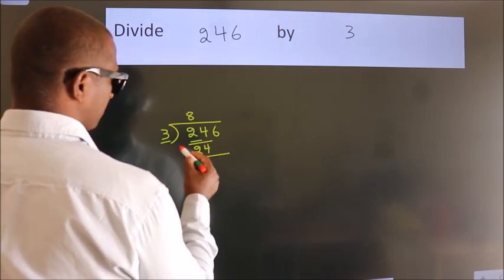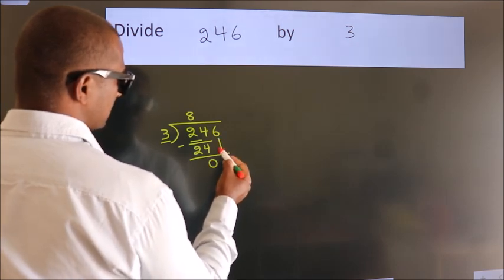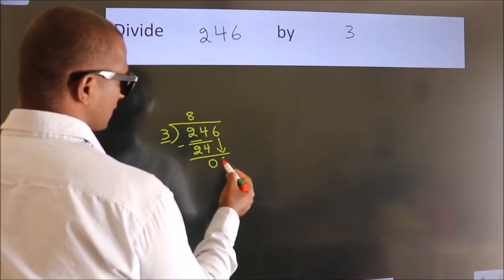Now we should subtract. We get 0. After this, bring down the beside number. So 6 down.